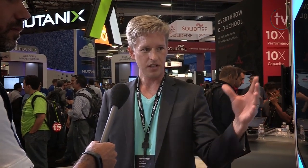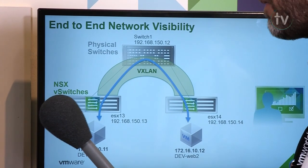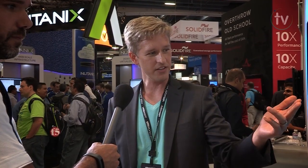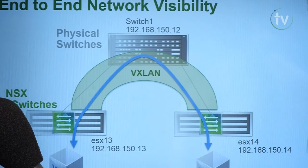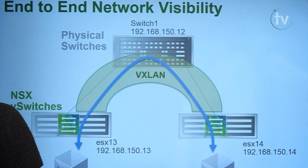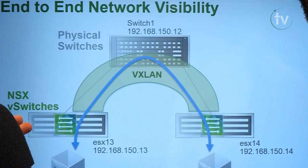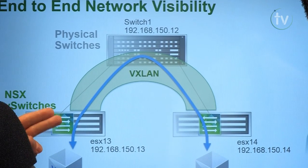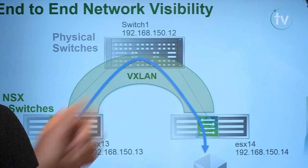Let's say we have some sort of flow going between these two VMs — maybe an SSH session. Because NSX is in the environment and we're doing full network virtualization, there's going to be VXLAN running. Packets will be encapsulated in VXLAN from one hypervisor and sent to the other, so we want visibility of where that flow went on both virtual and physical.